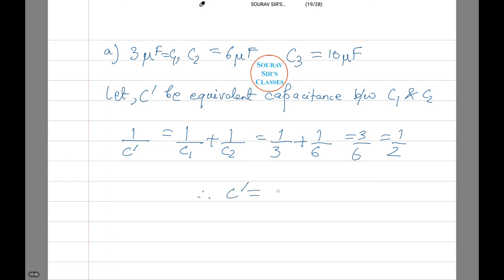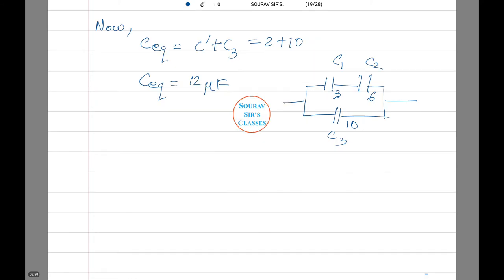Similarly, we will calculate for the others also. Now, we find the C equivalent equals C' plus C₃. This is because C₁, C₂ which is C', and C₃ are in a parallel series. Thus, C' plus C₃ equals 2 plus 10. The C equivalent equals 12 μF. This is our first answer. Let's see what the second question was.